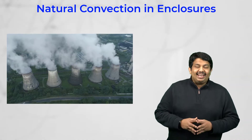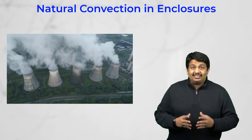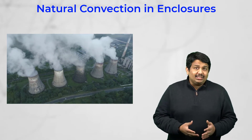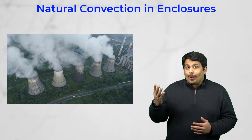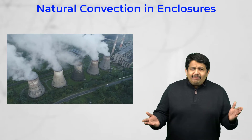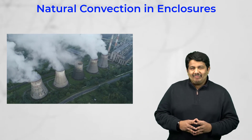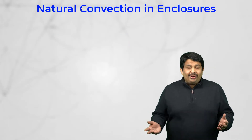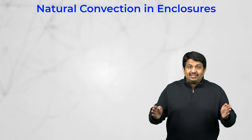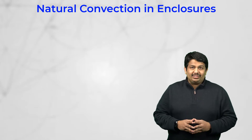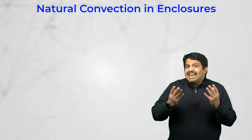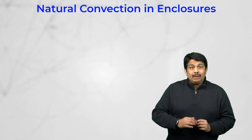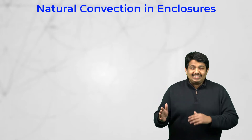In several engineering applications such as furnaces and cooling towers, heat is transferred between the object's surface and the seemingly stationary surrounding fluid. Under these conditions, where the fluid region is enclosed between the surfaces that are at different temperatures, natural convection is the dominant mode of heat transfer between the walls and the fluid.